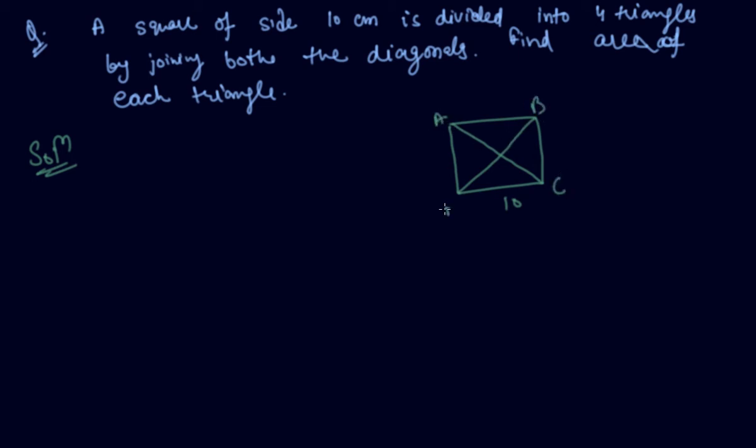So, let's say it is A, B, C, D and this point is O. And I have to find out the area of each triangle means these are four triangles. So, let me color all these triangles. This is one.